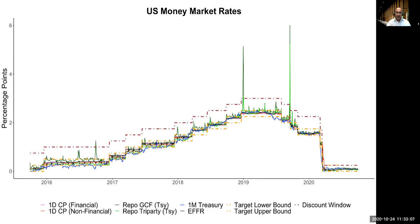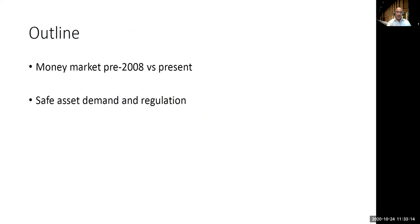This is the motivation of the paper: the repo spikes. The outline of my discussion is to talk about the money market pre-2008 versus the money market post-2008 — that's the heart of the analysis of the paper. What happened in the world from before 2008 to the present that we are seeing these types of spikes? What this paper really tells us is that it pinpoints exactly what it is that changed. Then I want to step back and talk a little bit more about safe asset demand and financial regulation.